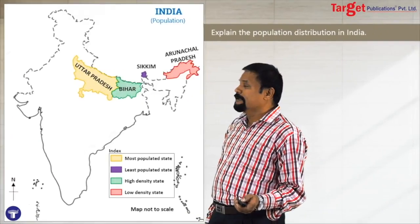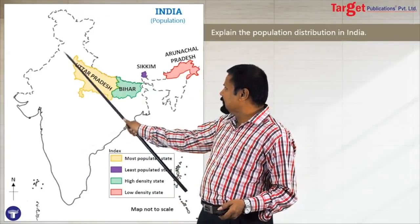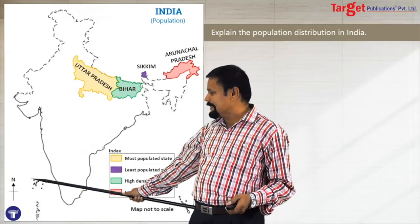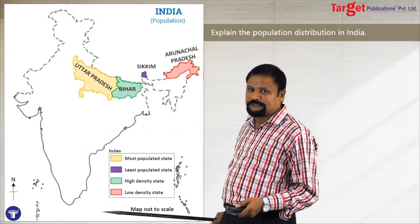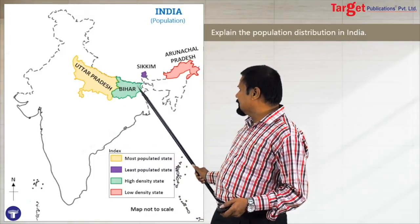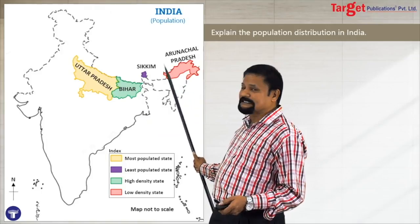Welcome back to part two about how to present the stencil map for your seventh question — the four more questions. In this part we go from lesson six to lesson nine. The question is about population of India. For any population question, draw the India stencil map, give the title India, then the subtitle, direction, and map not to scale. You can show the most populated state (UP), least populated state (Sikkim), densely populated state (Bihar), and low-density state (Arunachal Pradesh).